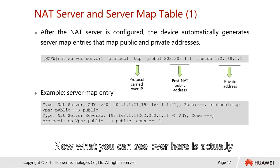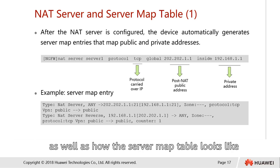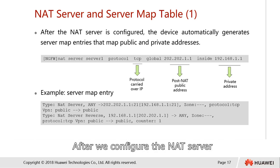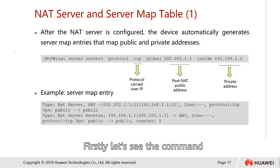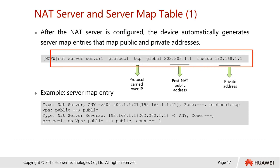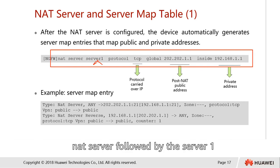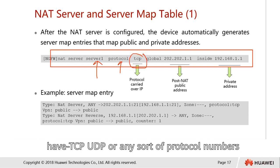Now, what you can see is how the NAT server command and the server map table look. After we configure the NAT server, the server map table will be generated automatically. Let's look at the command. The command starts with 'net server', followed by the name, then the protocol — TCP, UDP, or any protocol number.